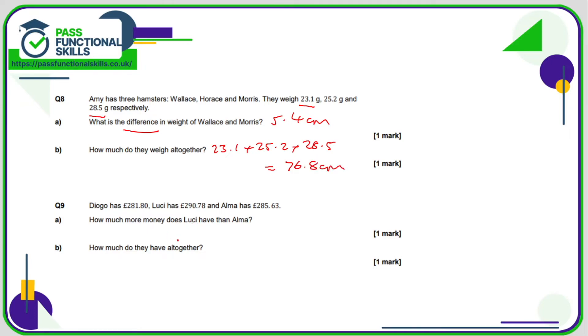Question 9a, how much more money does Lucy have than Alma? That's going to be a subtraction. So 290.78 minus 285.63. That comes to a total of £5.15.